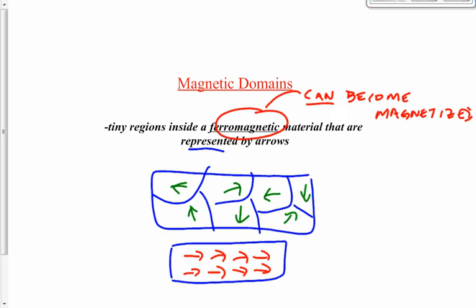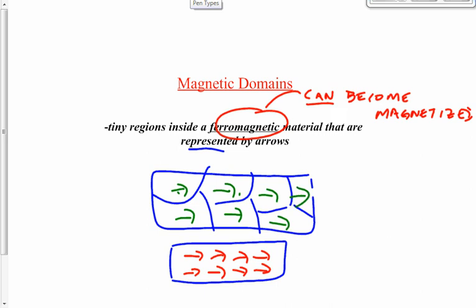The first way to magnetize a ferromagnetic material is to bring another magnet nearby, rub it, or touch it against it. The aligned domains in the magnet will affect the domains in the non-magnetized material, causing them to start pointing more or less in the same direction. So instead of random directions, those domains align, and now we have a magnet with a north pole and a south pole.